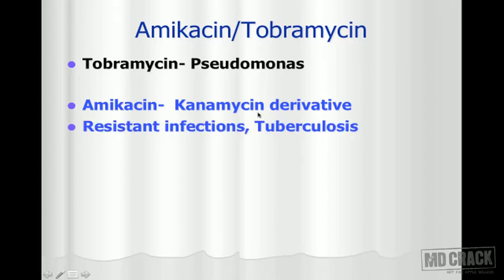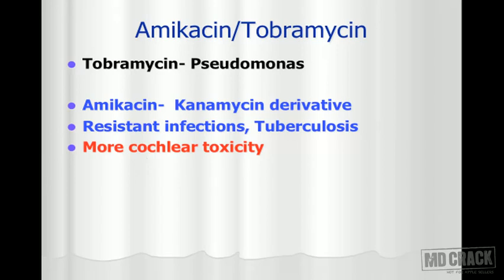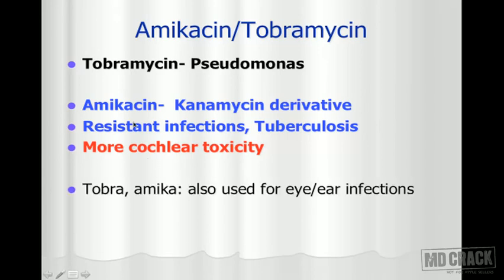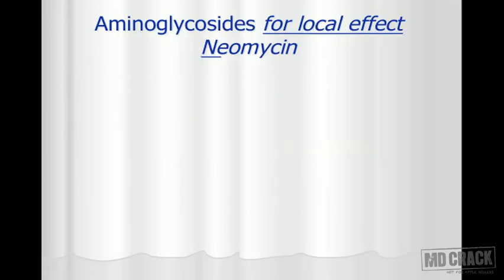Amikacin is useful for resistant infections and also for tuberculosis. For amikacin and kanamycin — remember the K — the cochlear component of ototoxicity is predominant, rather than the vestibular component. Tobramycin and amikacin can also be used locally for eye and ear infections. Next we move on to aminoglycosides used for local effect.